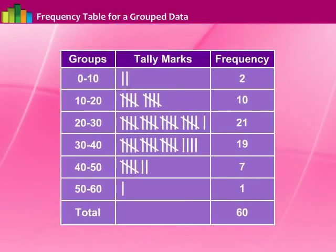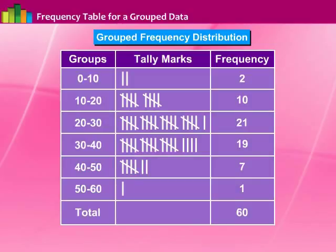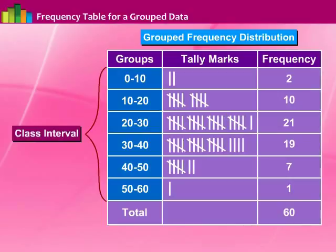Data presented in this manner is said to be grouped and the distribution obtained is called a group frequency distribution. It helps us to draw meaningful inferences — for example, most of the students have scored between 20 and 40, and 8 students have scored more than 40 marks out of 50. Each of the groups 0 to 10, 10 to 20, 20 to 30, etc., is called a class interval.